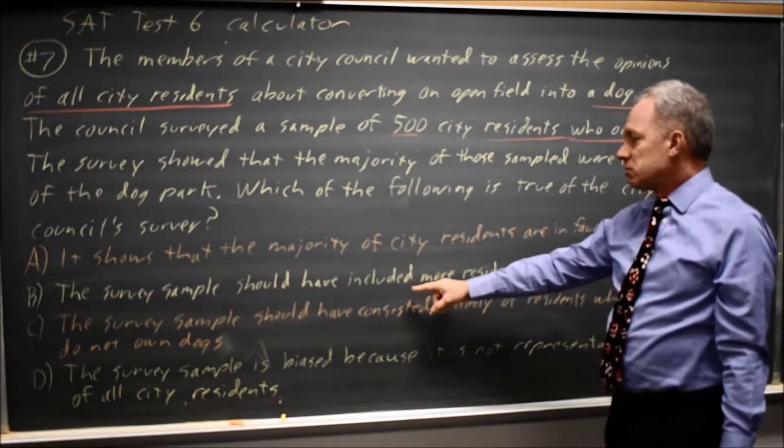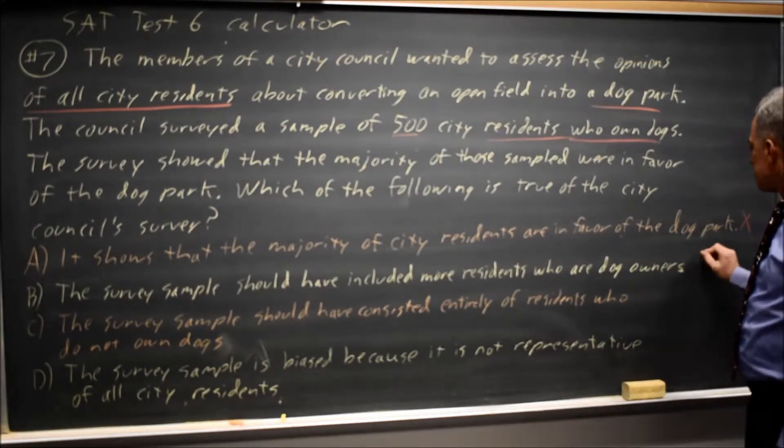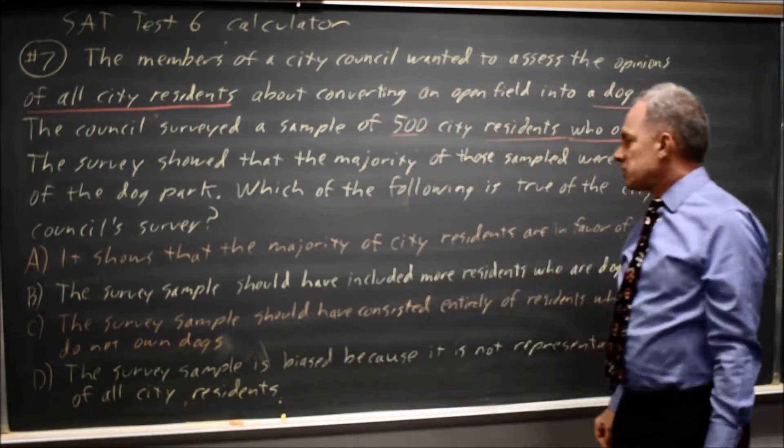Choice B: The sample should have included more residents who are dog owners. Again, that does not represent all city residents, so that would not be a reasonable conclusion.